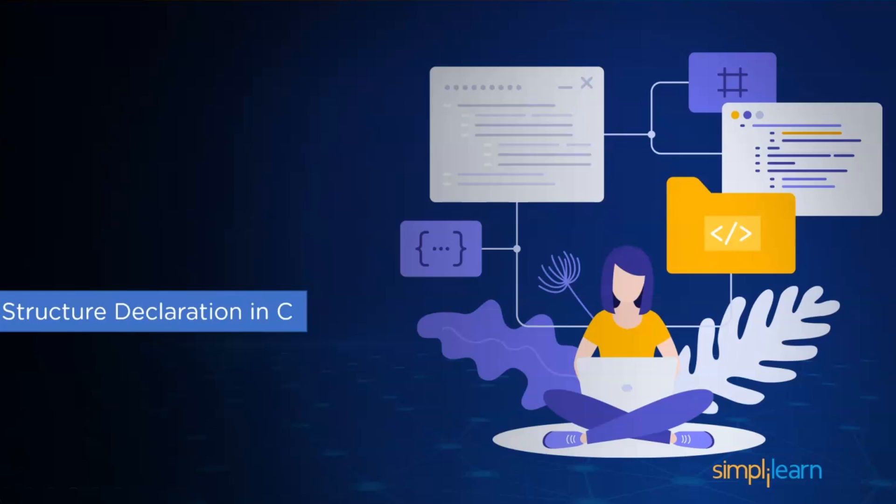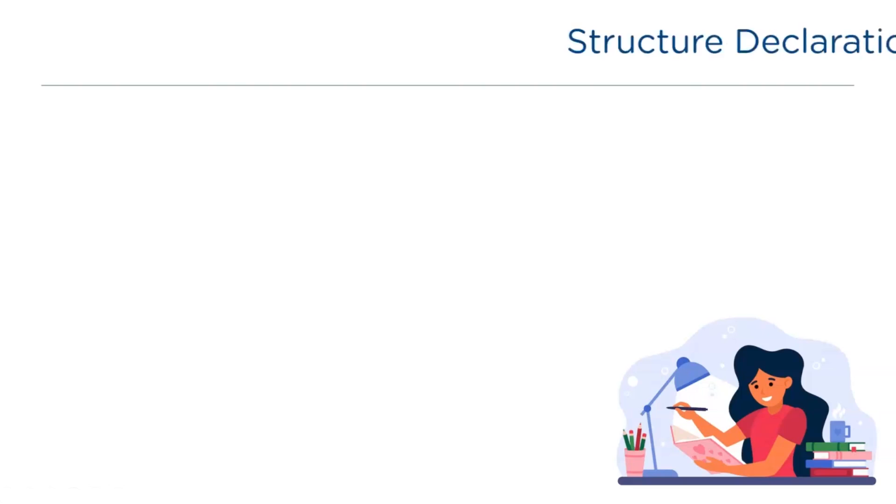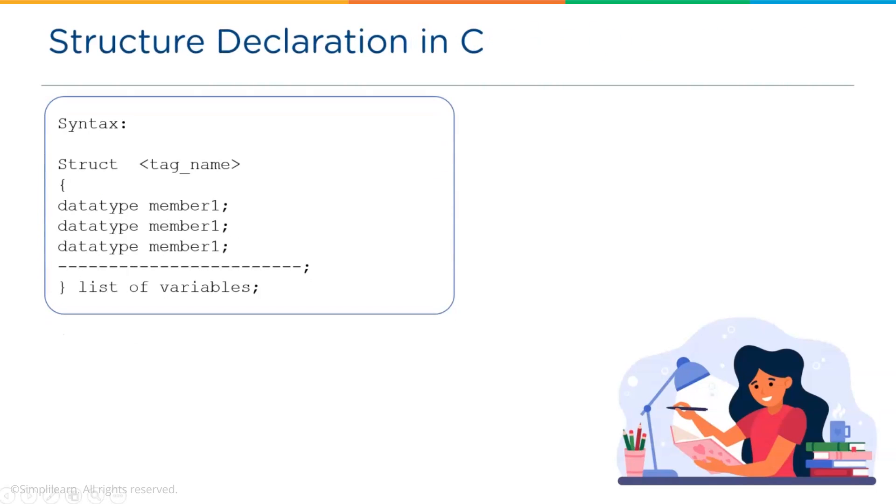Now let's have a look at structure declaration in C. We use the struct keyword before the tag name to define a structure. Tag name is nothing but a structure name. Whatever is declared inside the struct curly brackets are members of the structure. Once the members are declared, the variable has to be created to access the members of the structure.